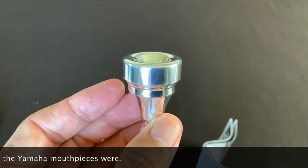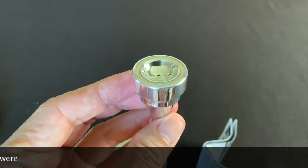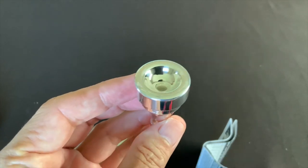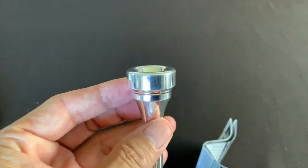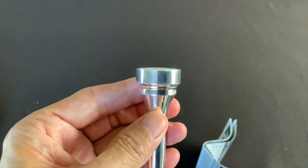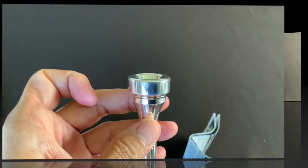So the Dennis Wick 4E is another lead trumpet mouthpiece. I mean, if you look at it right away, it's got a pretty shallow cup and a nice, very, actually very flat rim.